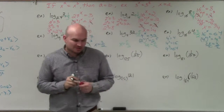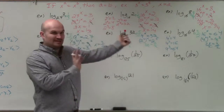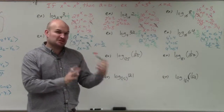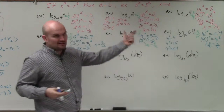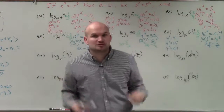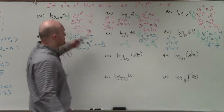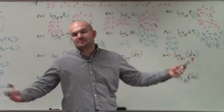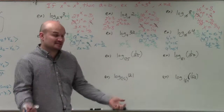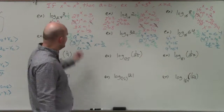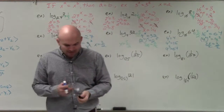An important clarification: I'm using these exponential equations to help me think through the problems, but each expression is a logarithm and we're just evaluating it — finding its value. So I write equals one-third, equals three-halves, because that's what the logarithm is equal to. It's not actually an equation; it's a logarithm we're evaluating.